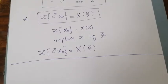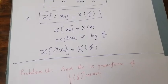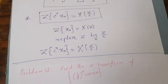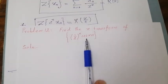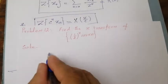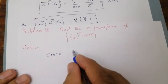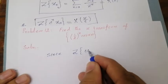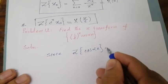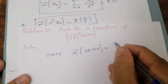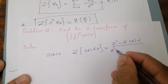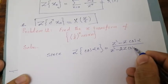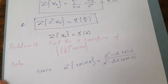We solved 11 problems in the previous lecture. Now let us use this property to solve problem number 12: find the Z transform of (1/2)^n · cos(αn). From the previous lecture, we know that the Z transform of cos(αn) is equal to (Z² − Z·cos α) divided by (Z² − 2Z·cos α + 1).